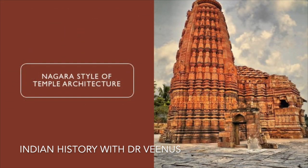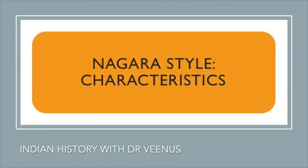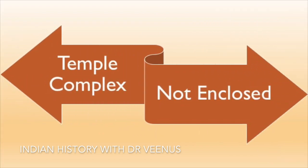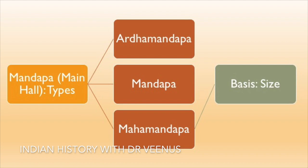The Nagar style of temple architecture is seen in temples built in North India. The major characteristics are: the temple complex is not enclosed; the Garbhagriha, the inner sanctum, is topped by a Shikhar which is curvilinear shaped; and the Mandap, which is the main hall, is of different types called Ardhimandap, Mandap, and Mahamandap, based on their sizes.